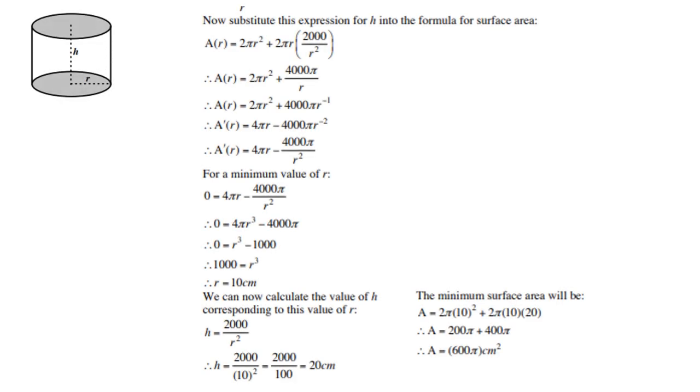Now we're going to substitute this value into the formula for surface area. h is replaced by 2000/r². Then you need to multiply into the bracket with 2πr. Then you get 4000π. Then you can take the r up, becomes r to power negative 1. Remember, I want to differentiate, so I need to do that. Derivatives don't like fractions.